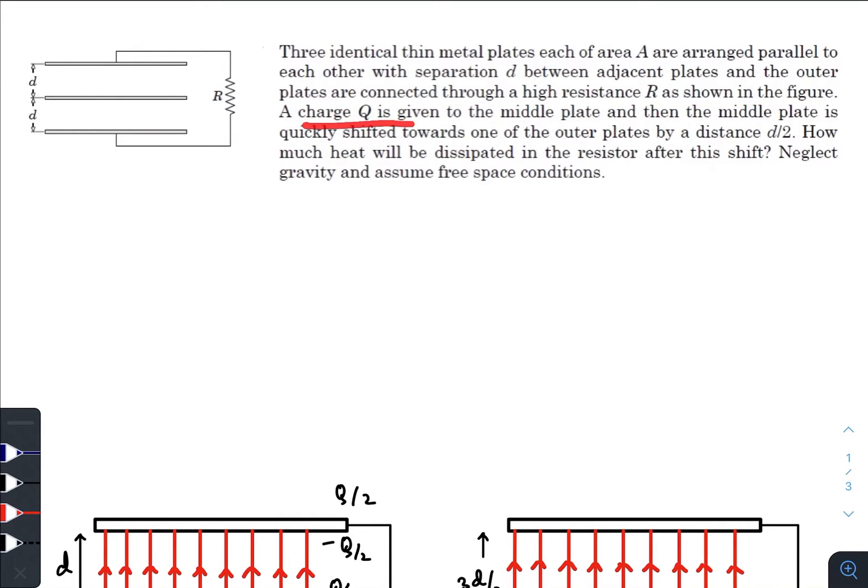A charge capital Q is given to the middle plate, and the middle plate is quickly shifted towards one of the outer plates by distance D by 2. How much heat will be dissipated in the resistor after this shift? Neglect gravity and assume free space conditions.